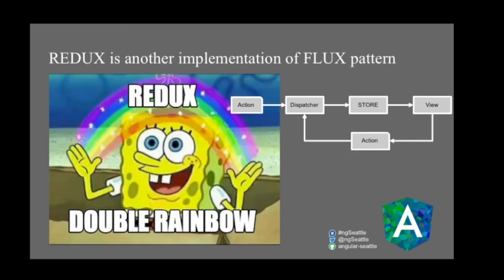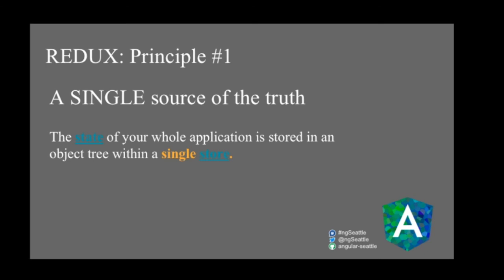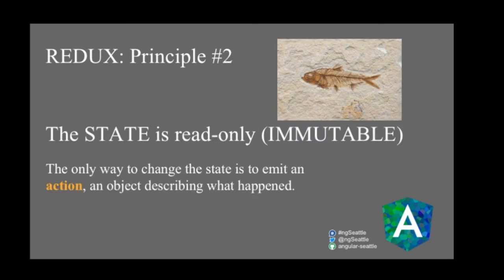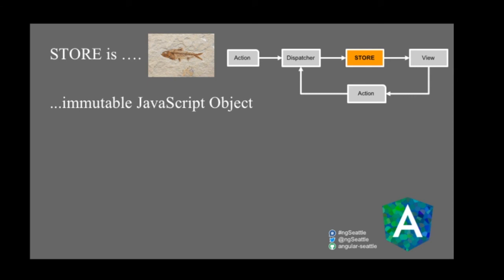Dan Abramov took it further and came up with Redux — originally just 18 lines of code, now the most popular library in web development. He defined three simple principles. First, a single source of truth: the entire application state is stored in one object tree. Second, state is read-only: you never mutate the existing object; instead, you create a new snapshot. This makes state an immutable JavaScript object at the application level, globally accessible to all components.